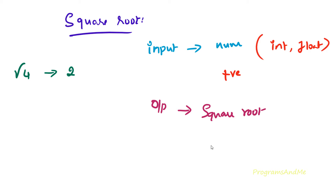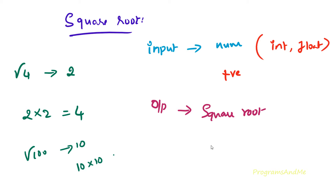When I multiply 2 with itself I get 4. Square root of 100 is 10 — when I multiply 10 with 10 I get 100. So let's write the program.